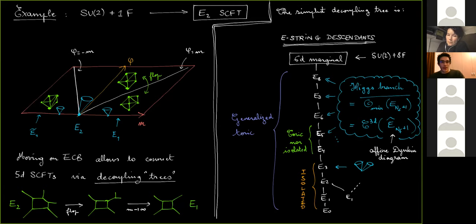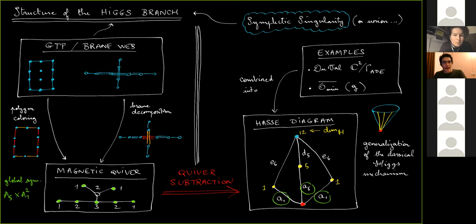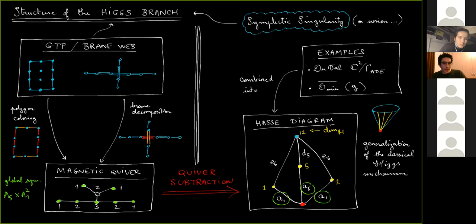This connection between the Higgs branch of 5D theories and the Coulomb branch of 3D theories will be the key to understanding the Higgs branch. For this reason, we call this quiver — whose 3D Coulomb branch realizes the Higgs branch — a magnetic quiver. The goal is to find these magnetic quivers because they offer a description. Here is an example: I take a certain brane web or generalized toric polygon, and there is an algorithm involving either polygon coloring or brane decompositions, both combinatorial, that produces a magnetic quiver.